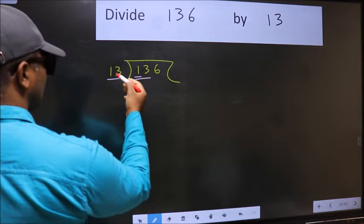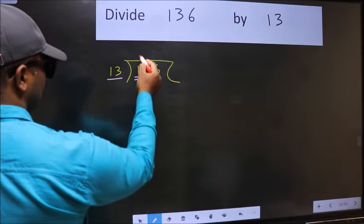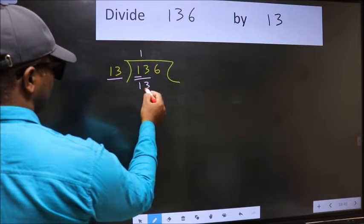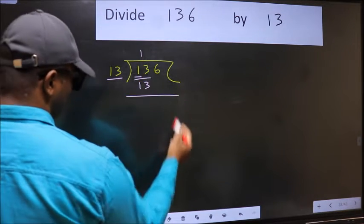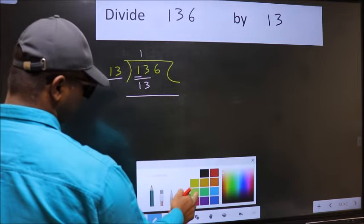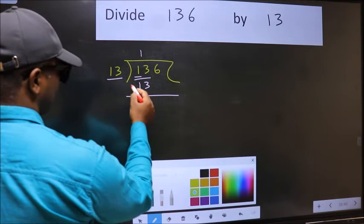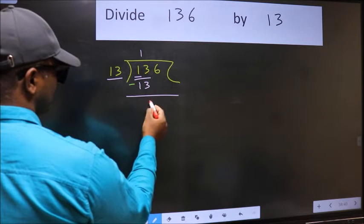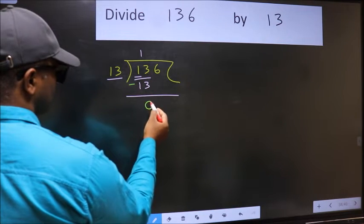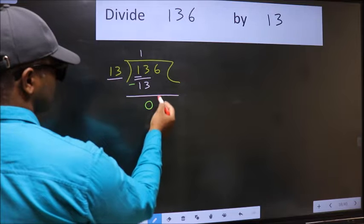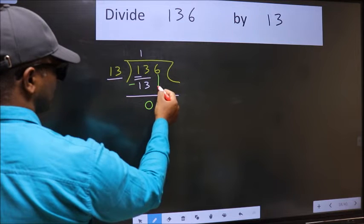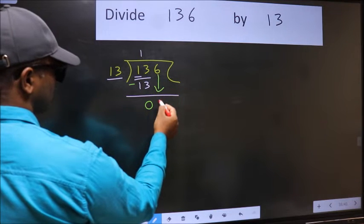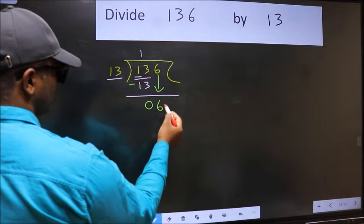When do we get 13 in the 13 table? 13 once is 13. Now we should subtract. 13 minus 13 is 0. After this, bring down the beside number, so 6 comes down.